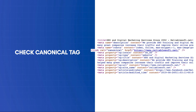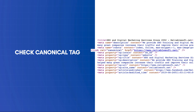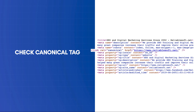Don't worry, though. If you're using WordPress, you can install the free version of the Yoast SEO plugin and it will do this automatically for all your website pages. If you're not on WordPress and your canonical URL is not defined or wrong, you need to contact your CMS provider or a developer and get some help.